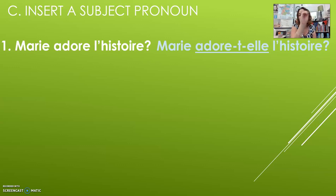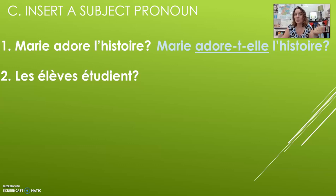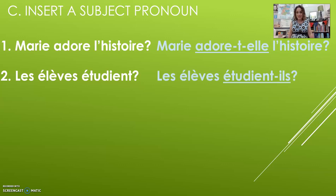You can only invert subject pronouns: je, tu, il, nous, vous, ils, elles, on. So for «Les élèves étudient?» — I can't touch «les élèves», it stays where it is. Who is that? It's a group, so I use «ils» and insert it after the verb: «Les élèves étudient-ils?» I don't need to add a T because there's already one in the verb ending.